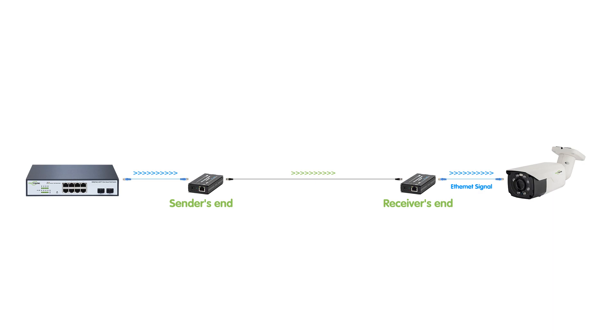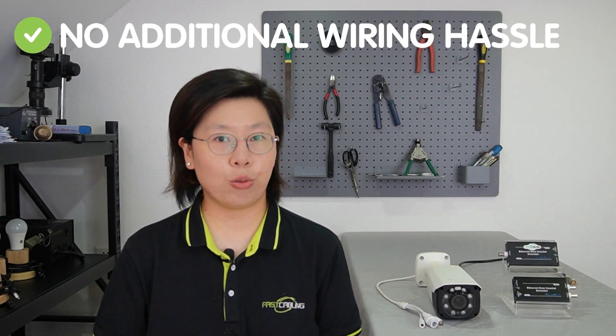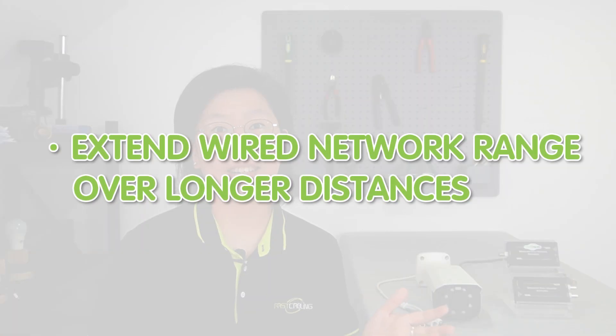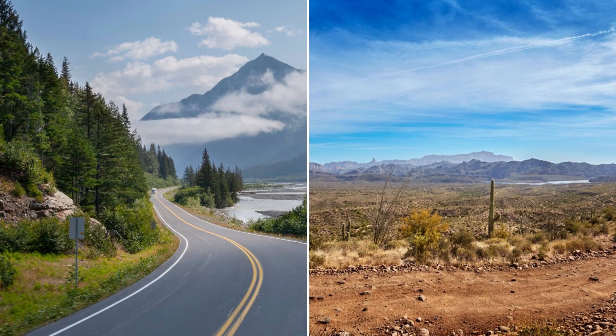At the receiver's end, another extender device waits to receive the signal. It decodes the data back into Ethernet format, making it accessible to devices connected at that end. This means you can seamlessly connect to your network without any additional wiring hassle. What's truly remarkable is how these extenders manage to extend your wired network range over longer distances — even reaching areas where laying new Ethernet cables would be impractical or costly.